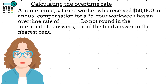In this example, we have a non-exempt salaried worker who received $50,000 in annual compensation for a 35-hour workweek. What is his overtime rate? Do not round in the intermediate answers; round the final answer to the nearest cent.